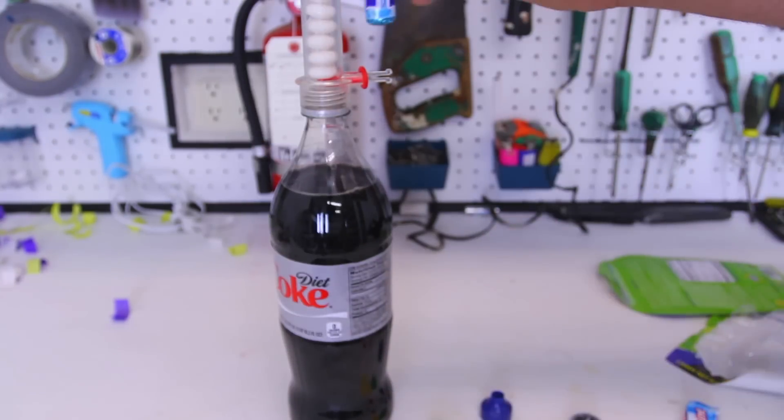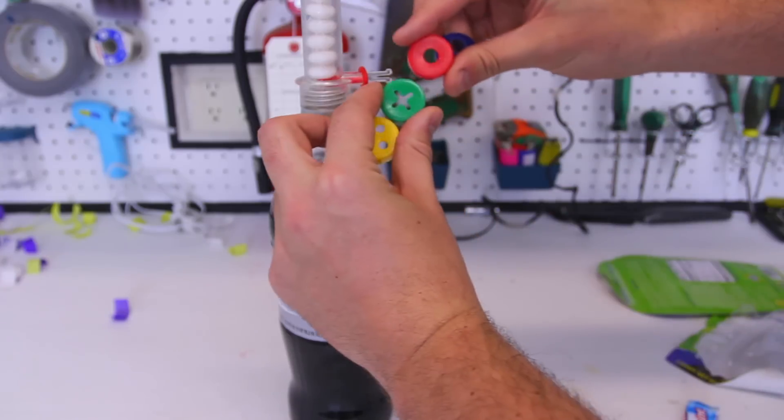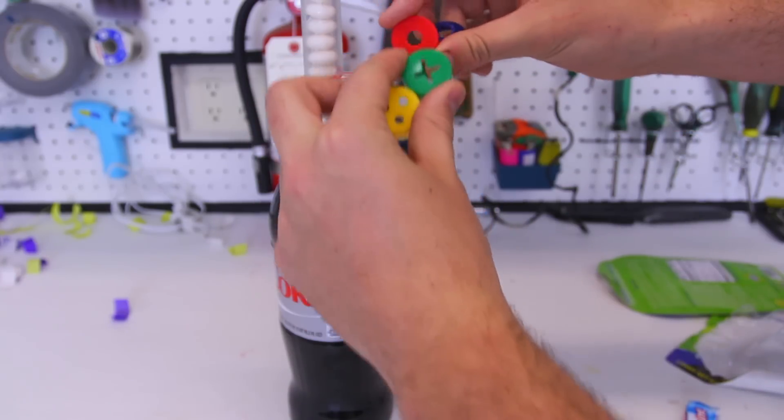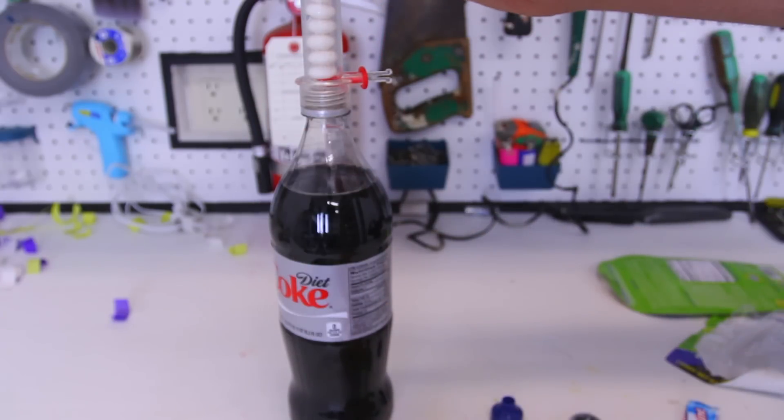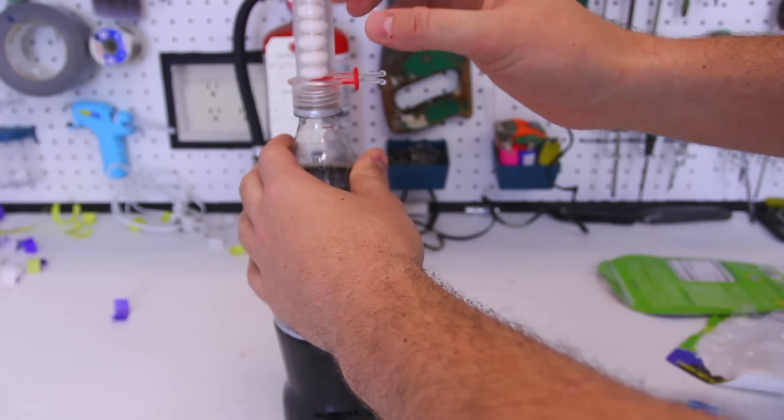Looks like it fits half a pack of mentos, pretty easy. They have different types of holes. We're just gonna go with the regular one. All I have to do is pull this thing and the mentos will drop and the diet Coke will explode.